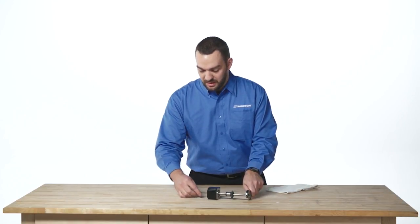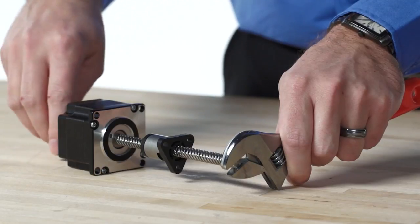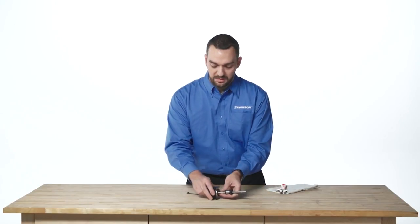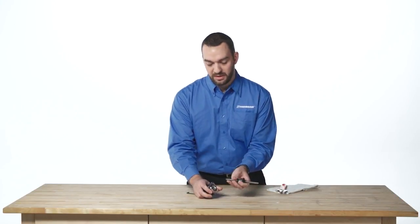This allows you to loosen up that cap screw. Once you have the threads fully disengaged, it's very easy to pick up the assembly and remove that lead screw.